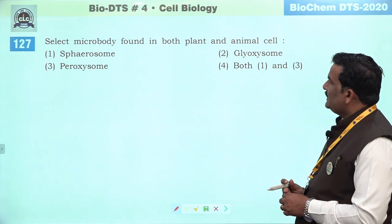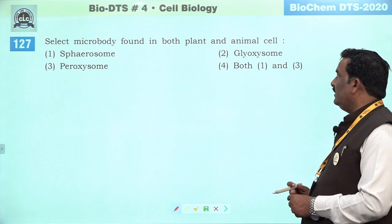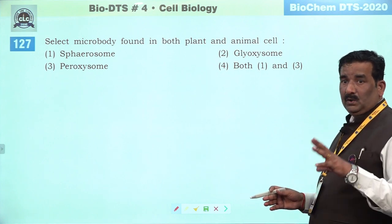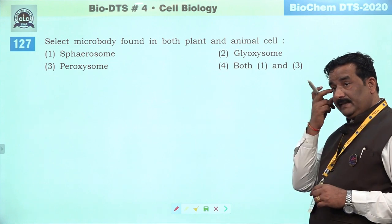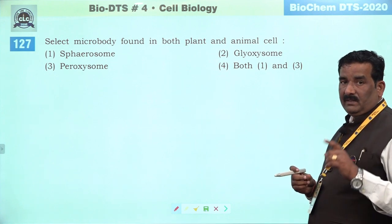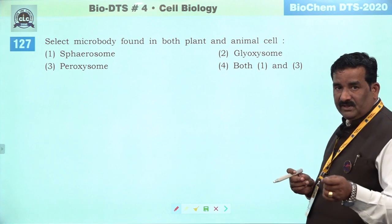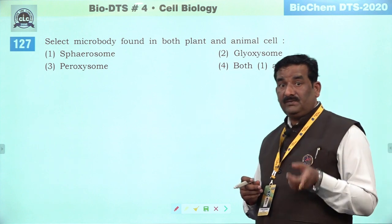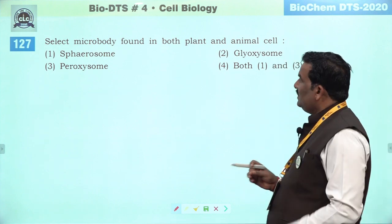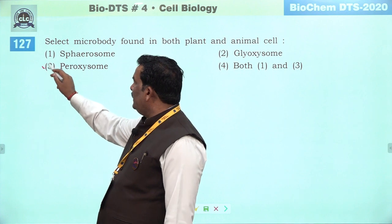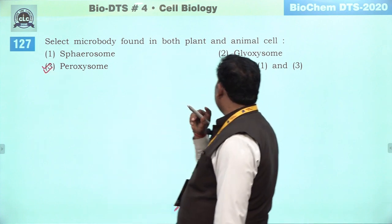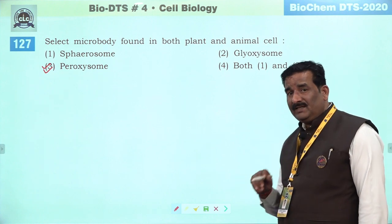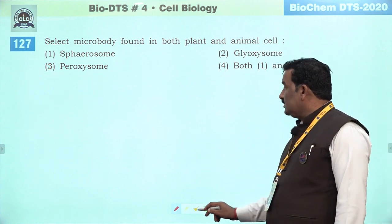Next question: select microbody found in both plant and animal. Plant aur animal ke andar dono mein microbody kaunsi paai jayegi — woh hai peroxisome. Peroxisome C3 plant mein photorespiration karta hai, jabki kidney ke andar animals mein yeh detoxification ka kaam karta hai. Isliye peroxisome is the right answer. Spirosome aur glyoxysome ka connection higher plants mein khaas taur se jahan fat storage hota hai, wahan hota hai.